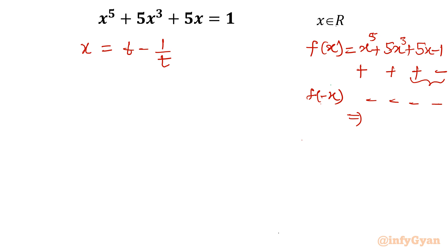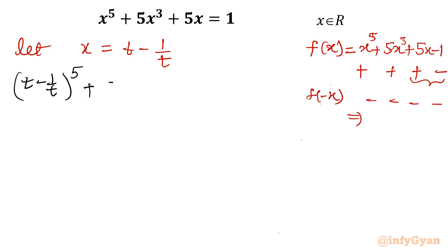Let us come to the point. Our substitution is x equal to t minus 1 over t. We are going to put this value of x into the equation: t minus 1 over t, whole power 5, plus 5 times t minus 1 over t whole power 3, plus 5 times t minus 1 over t.